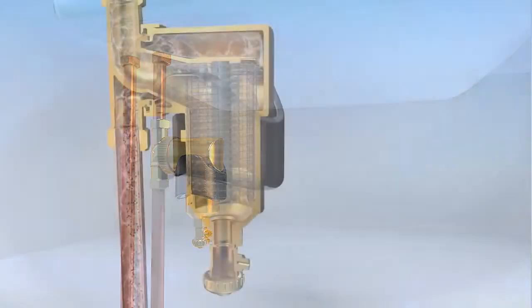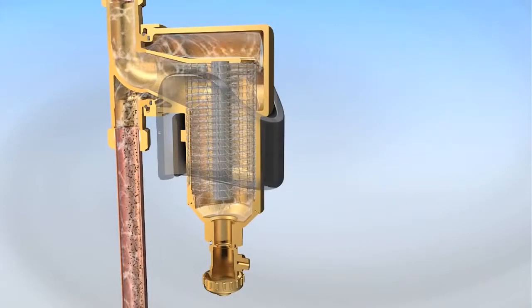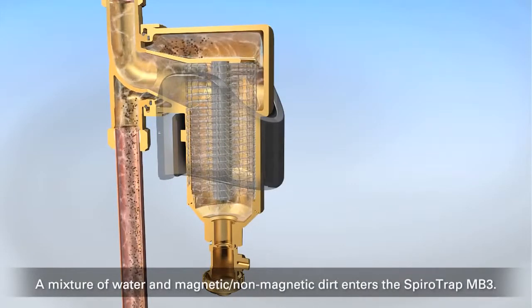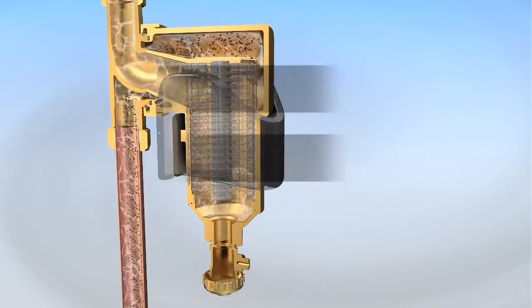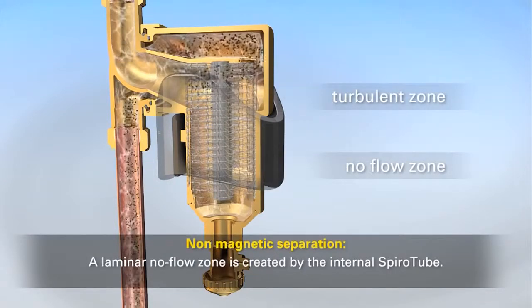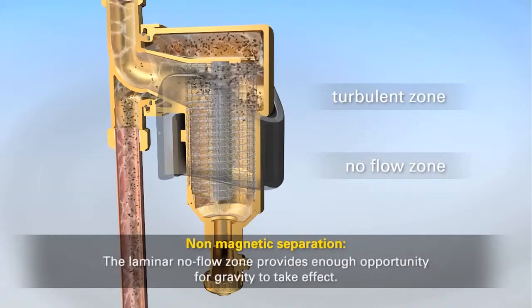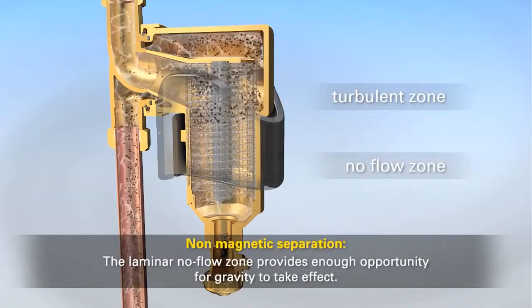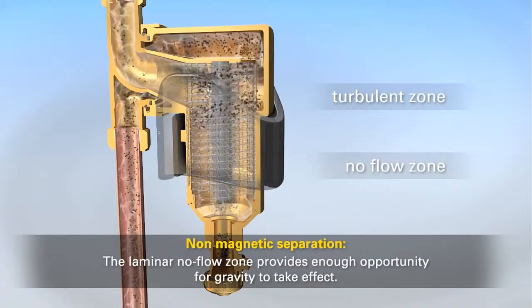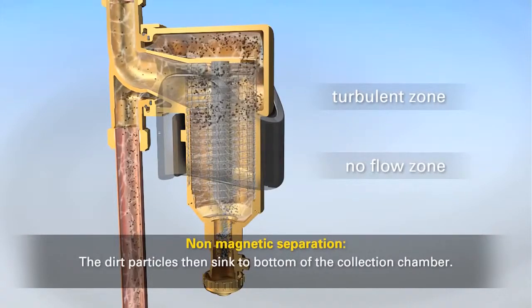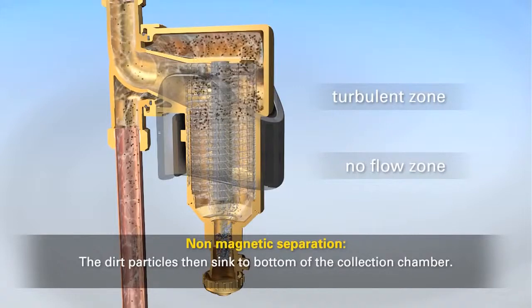The system water carries magnetic and non-magnetic dirt particles through the SpiroTrap MB3. A laminar no-flow zone is then created by the unit's internal spiro tube, which provides enough opportunity for gravity to take effect. The dirt particles then sink to the bottom of the collection chamber.